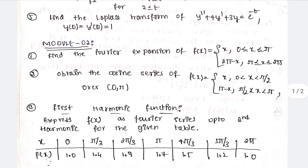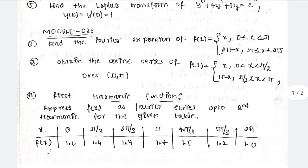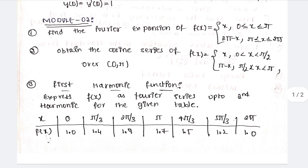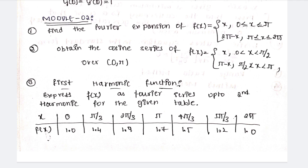Next model is model 2. Find the Fourier expansion of f(x) = 2x - x. That is important. The second one is obtain the cosine series of f(x). This is important. The problem is important. This concept is very important.